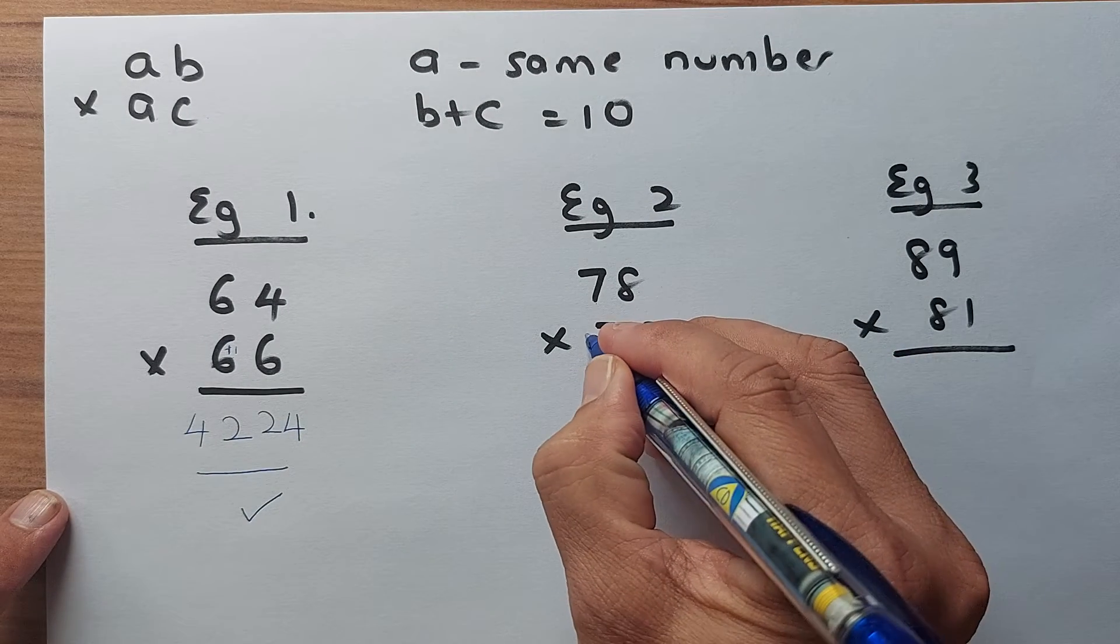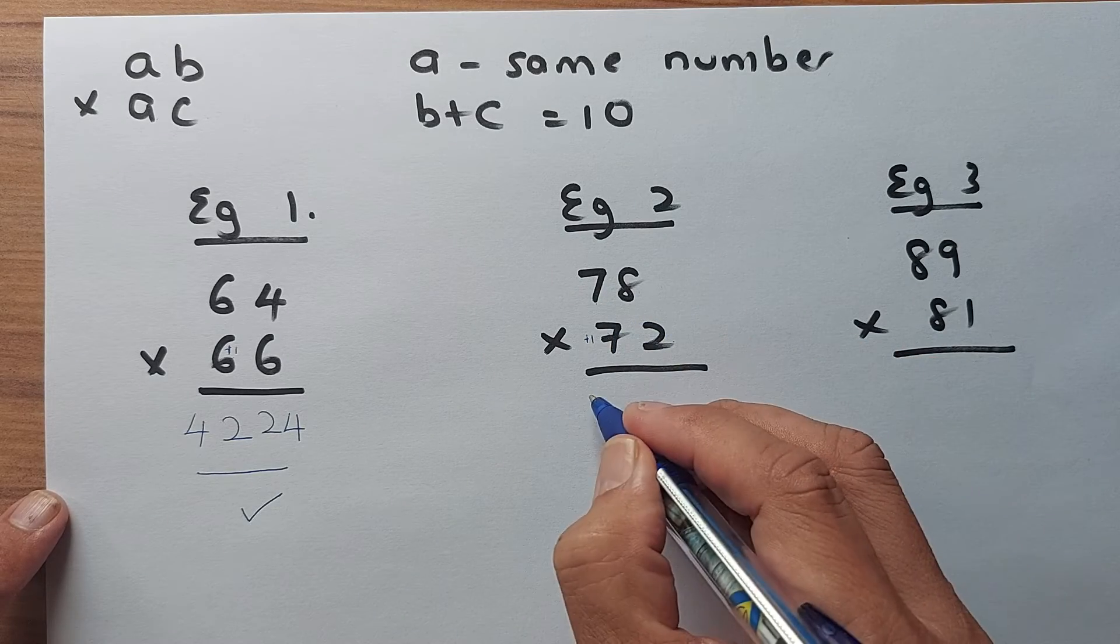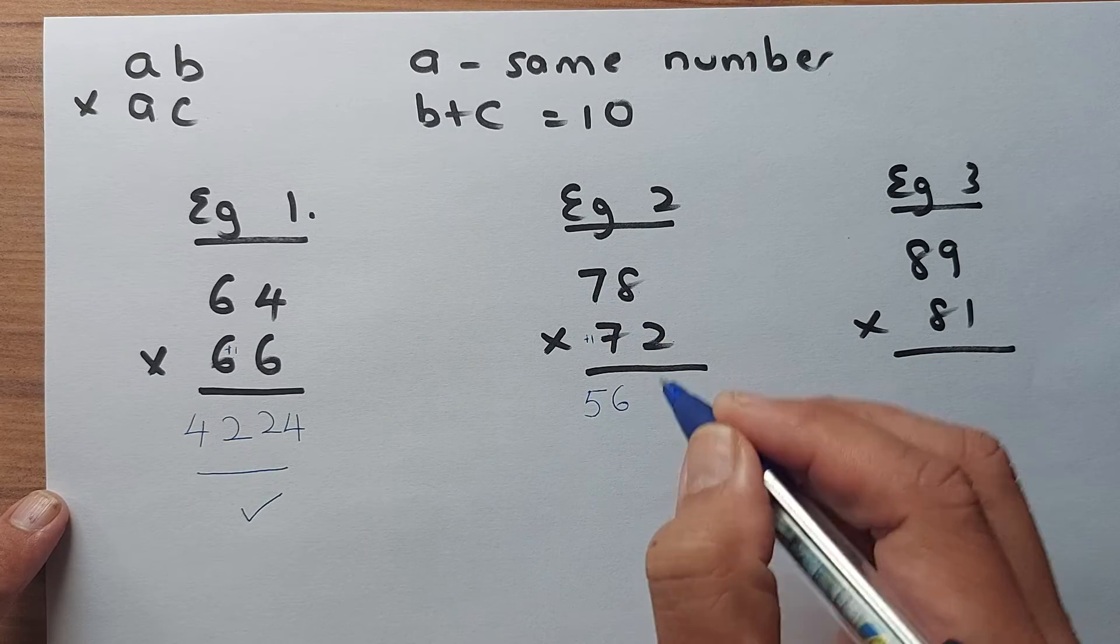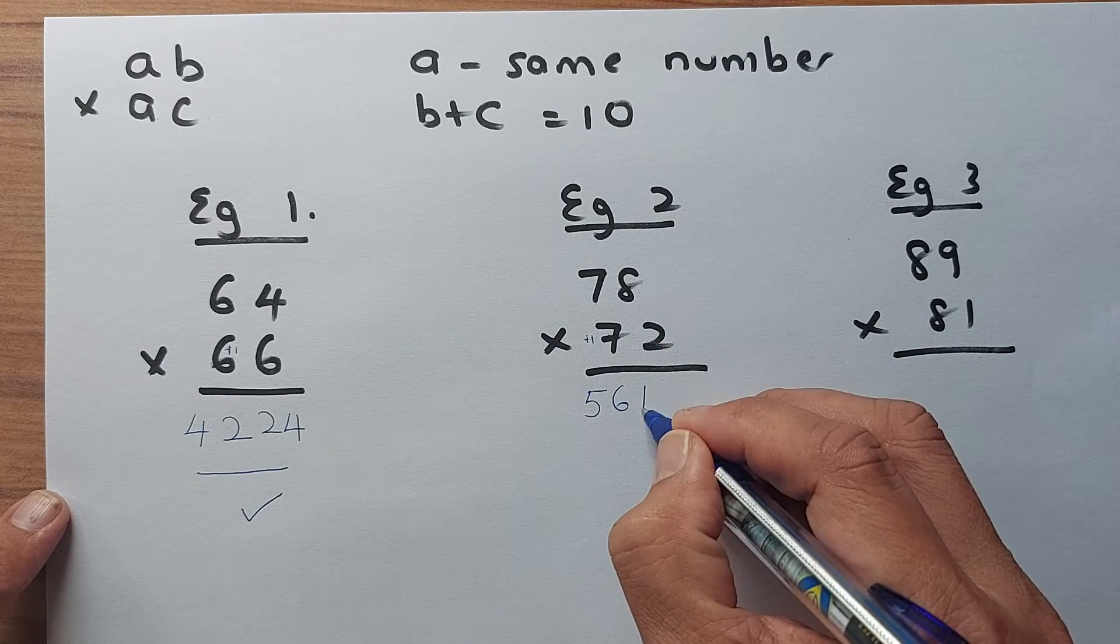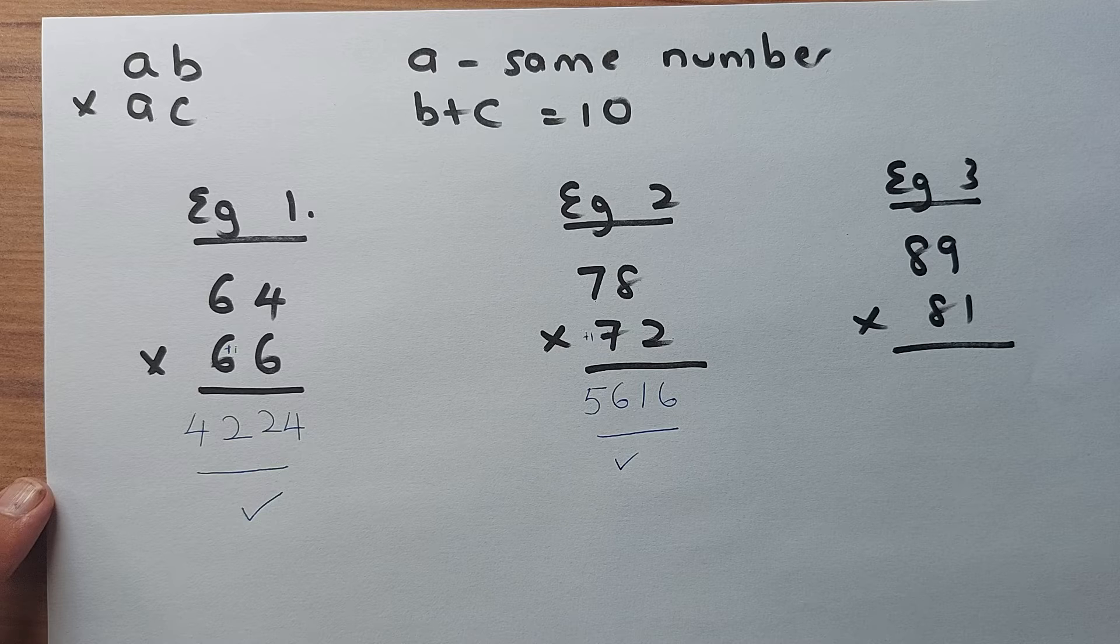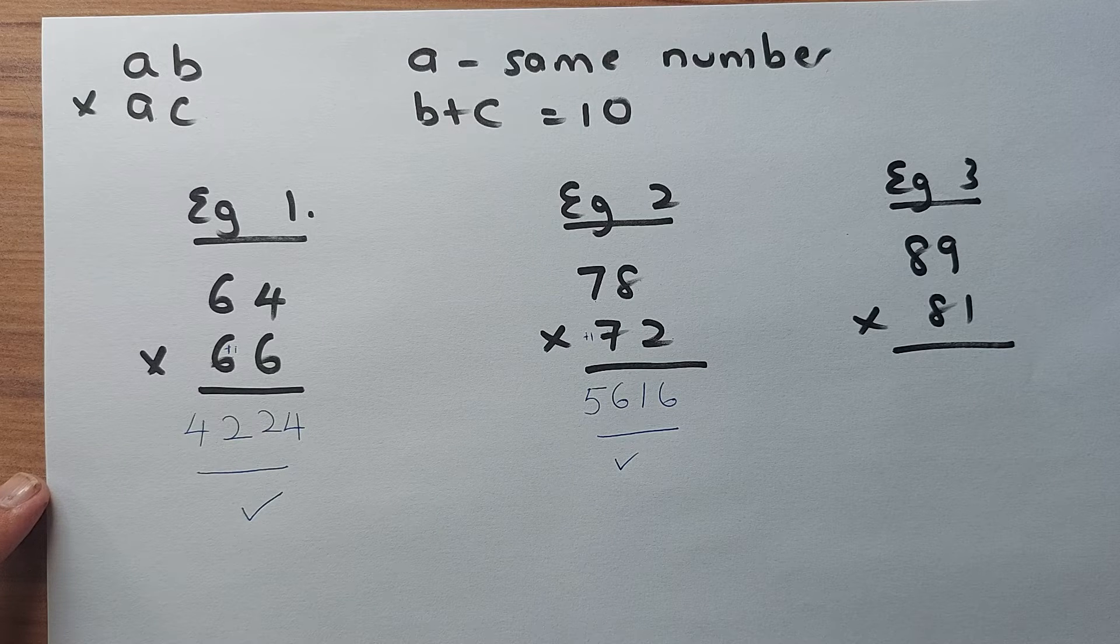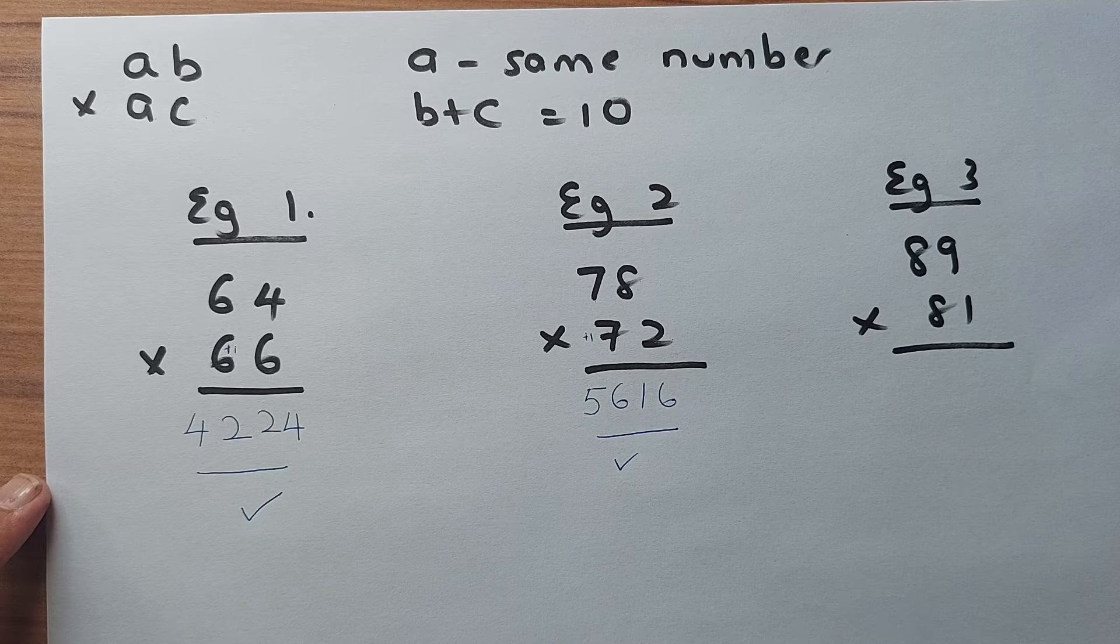So again 7 will increase by 1. It becomes an 8. So 7 times 8 is going to be 56. And then 8 times 2 is going to be 16. And that will be done in seconds. You don't have to do any algorithm. You just need to do this method and it should be done easily.